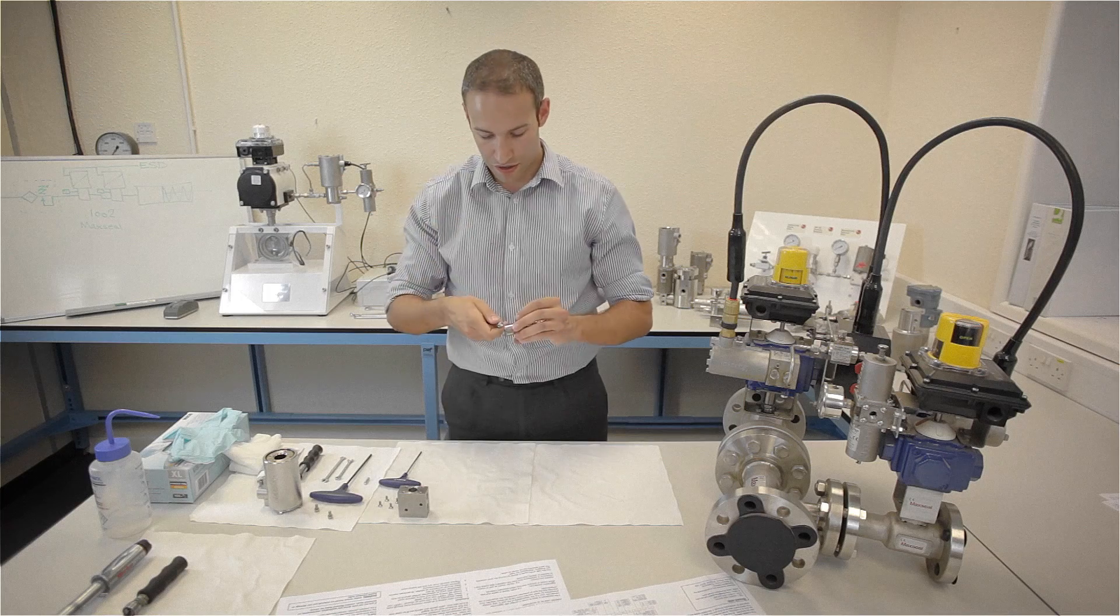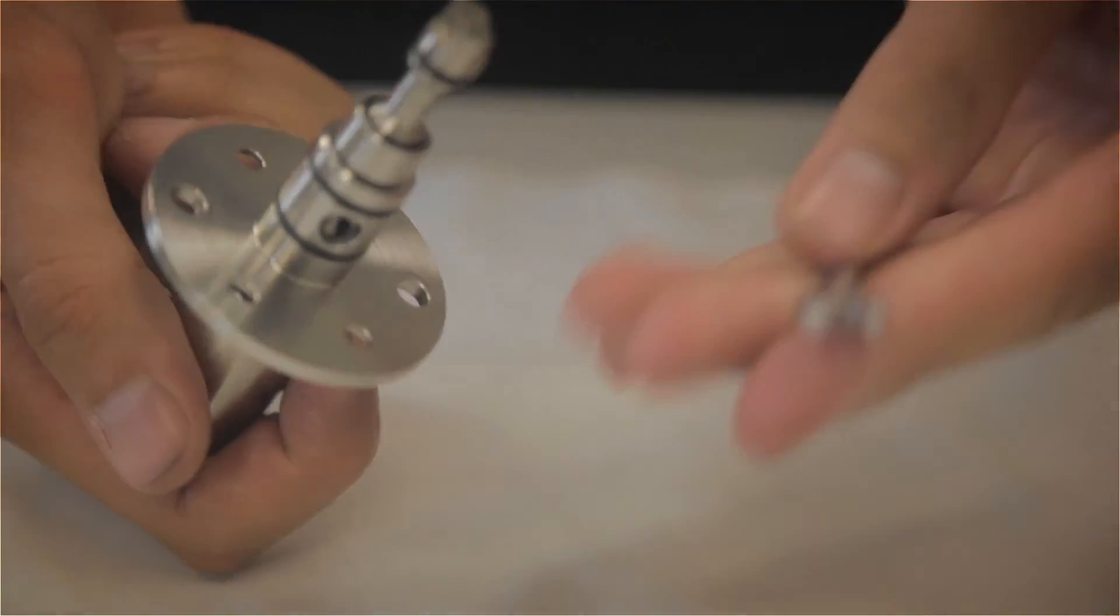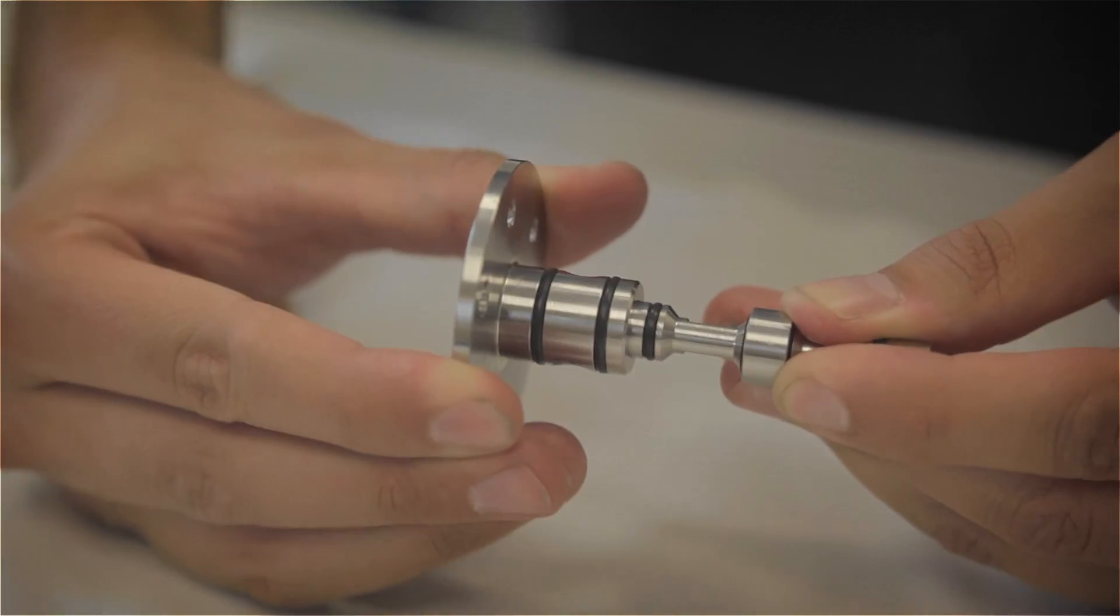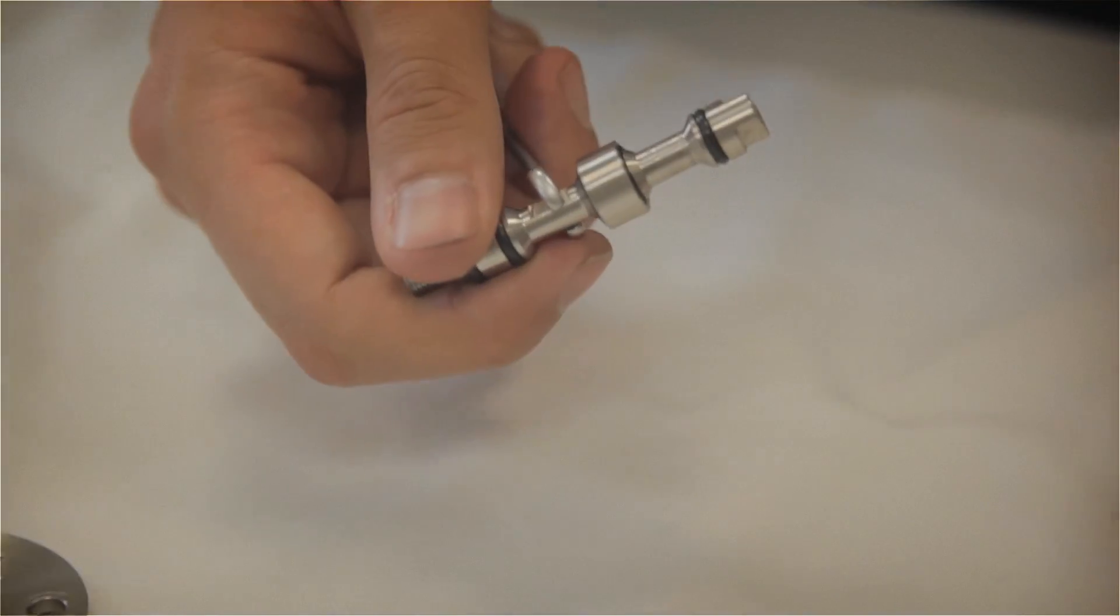We use a small tommy bar and a 5mm spanner. Unscrew the armature, remove the top cylinder, and disassemble the poppet.